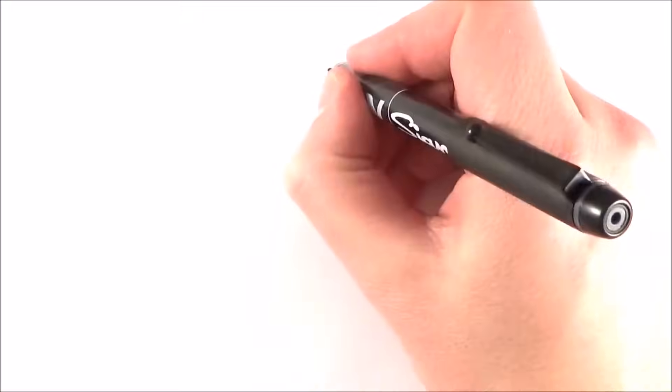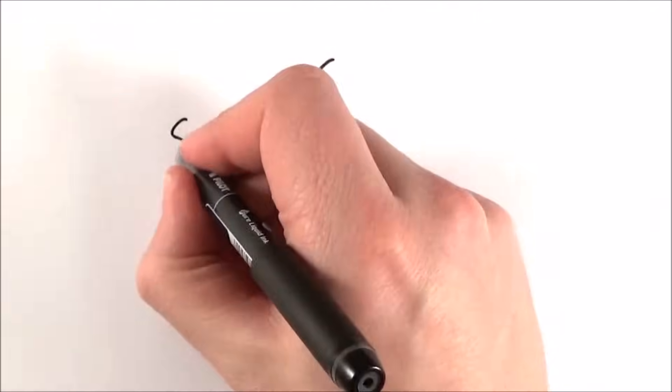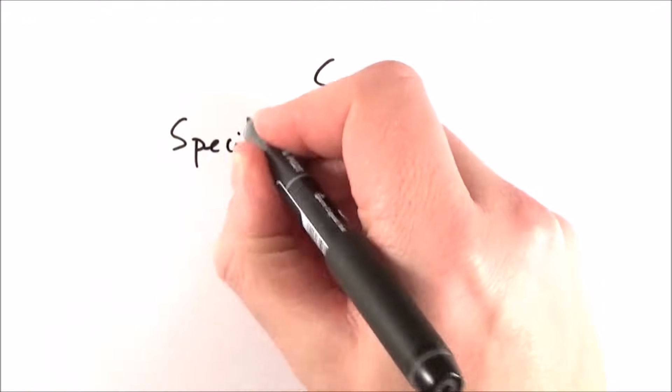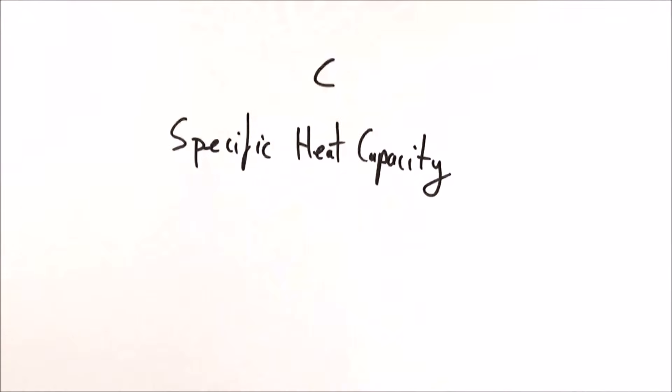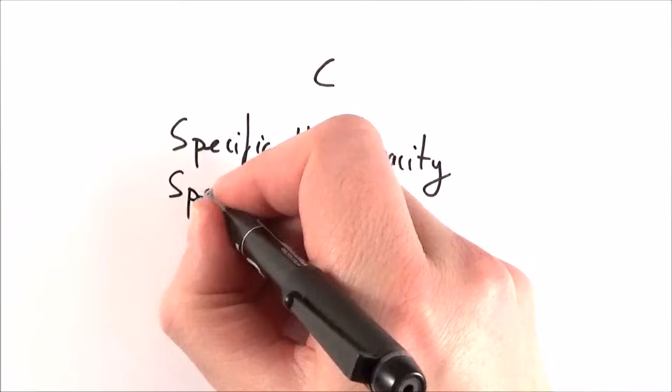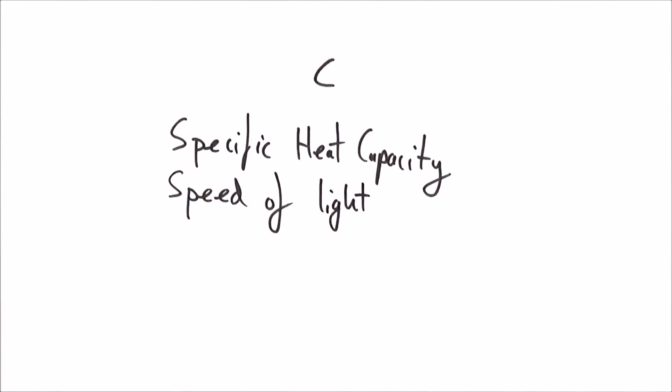So, quantities and units, what do they mean? Well, if we look at the letter C, the letter C can represent many things in physics. It could be for a material, perhaps the specific heat capacity. It could also be the speed of light, or perhaps the capacitance.